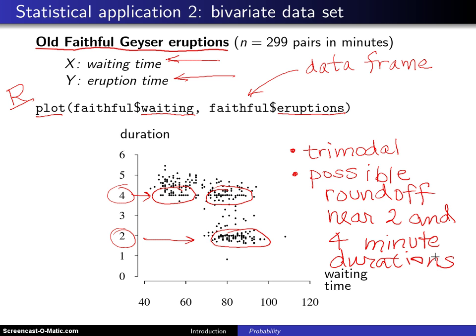In probability, we will be looking at joint distributions of two random variables, and this is their statistical equivalent in terms of a data set.